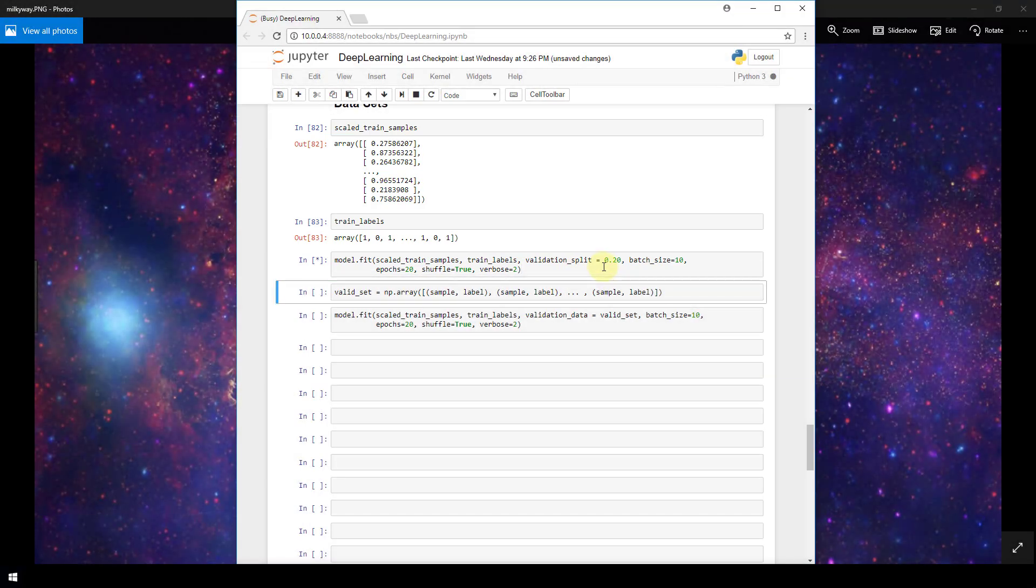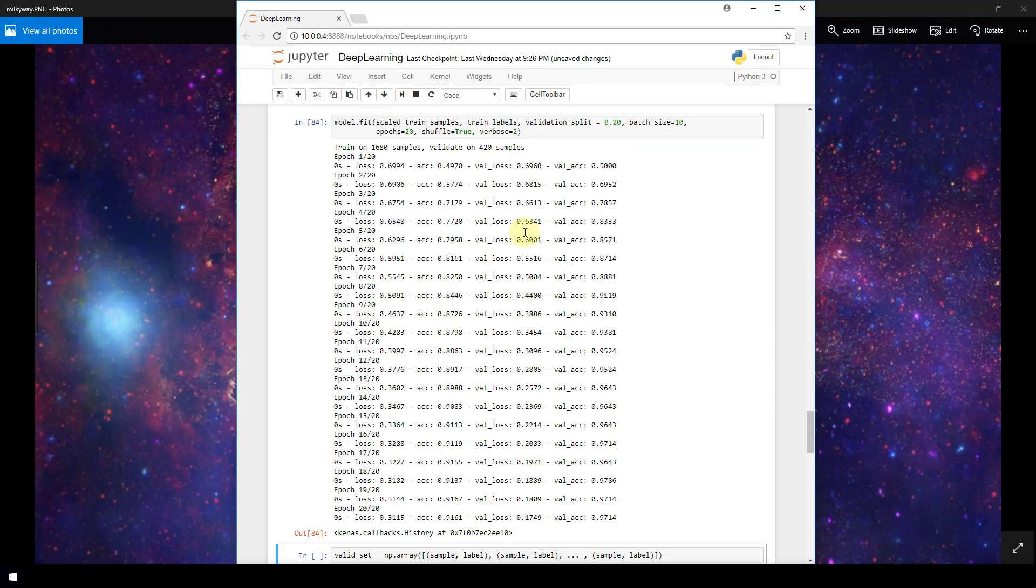So now if we run this fit function, recall before that we only had the loss and accuracy metrics. Now, since we added a validation set, we also have the validation loss and validation accuracy metrics as well. Now, one other thing to point out is for our validation set, we're kind of implicitly creating this validation set here using the validation split parameter.